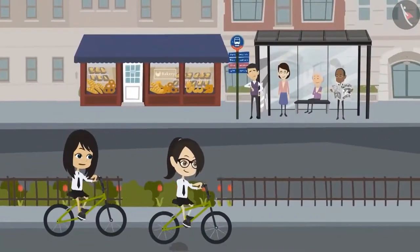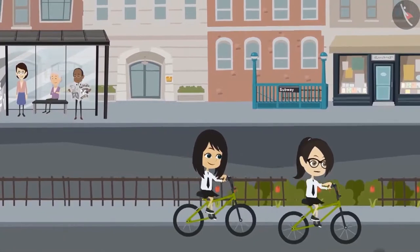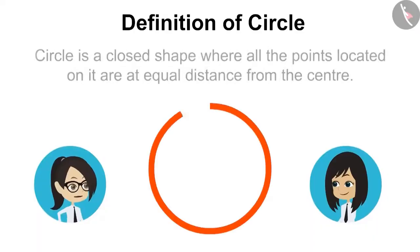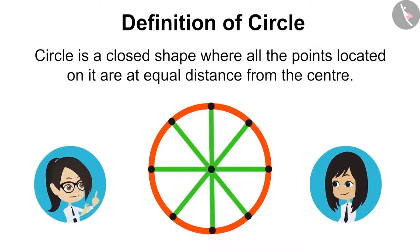Remember, what did sir tell us about circle yesterday? Yes, I remember it well. Circle is a closed shape where all the points located on it are at an equal distance from the center.